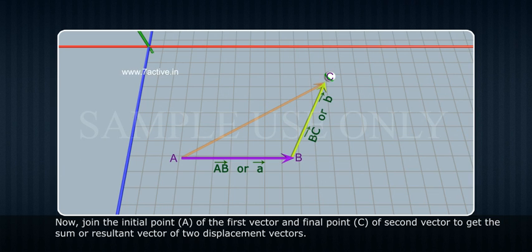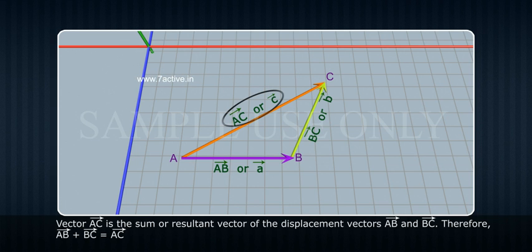Now, join the initial point A of the first vector and final point C of the second vector to get the sum or resultant vector of two displacement vectors. Vector AC bar is the sum or resultant vector of the displacement vectors AB bar and BC bar.